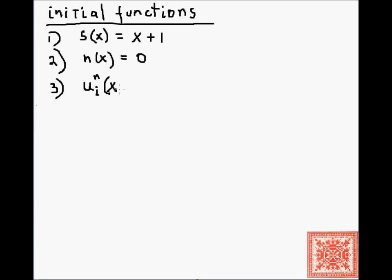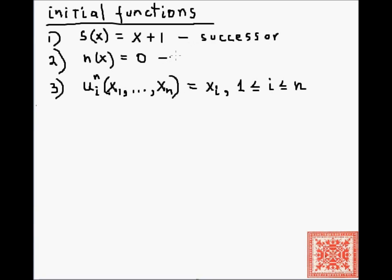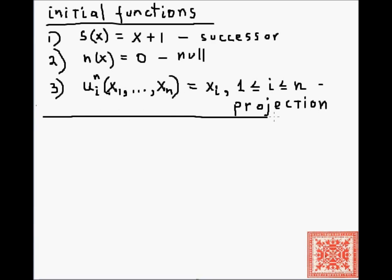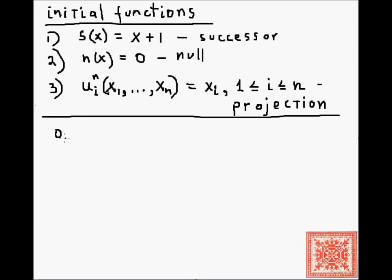For the projection function U_i^n, the superscript n is the number of arguments the function takes — x1 through xn — and i is the index of the argument we want to access or project. It returns the value of x_i. Programmatically, we can think of the projection function as an array access: you have a sequence of n elements and you access element i, where i ranges from 1 to n.